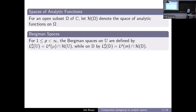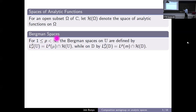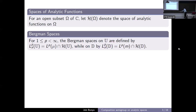Then we have Bergman spaces. These are very famous spaces of analytic functions. The Bergman space is just the usual L^p space but consisting only of analytic functions. We define the Bergman space of the upper half plane as the L^p space intersected with analytic functions. The Bergman space on the disk is similarly the analytic functions in the usual L^p space. Their respective norms carry over from the L^p norm.